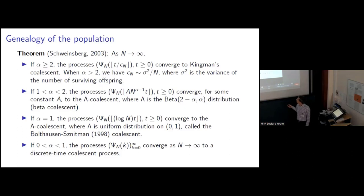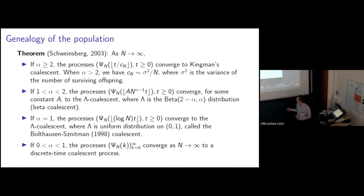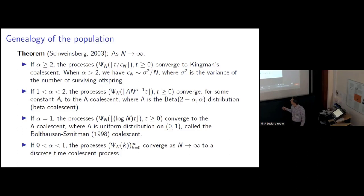That is, the lambda coalescence where lambda is the beta distribution with parameters 2 minus alpha and alpha. When alpha is equal to 1, the beta(1,1) distribution is uniform on (0,1) and the associated lambda coalescence is known as the Bolthausen-Sznitman coalescence. If alpha is between 0 and 1, we have a different kind of case because there are multiple large families in every generation, and the ancestral processes converge to a discrete time coalescent process.